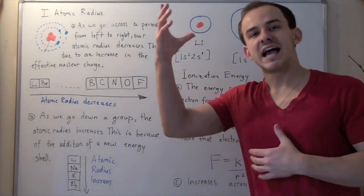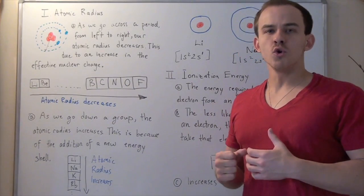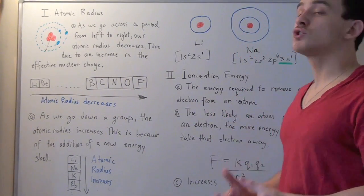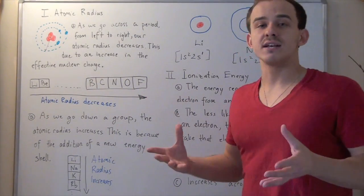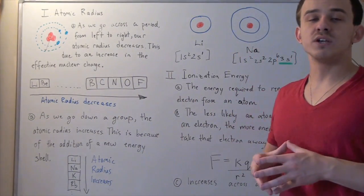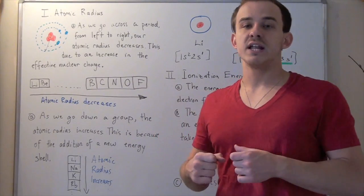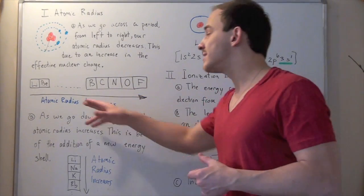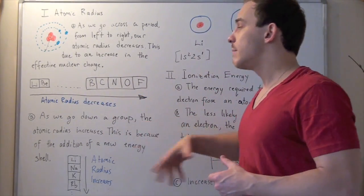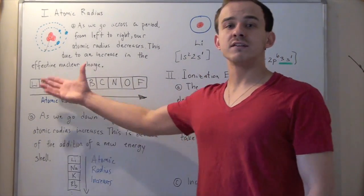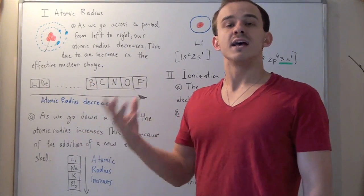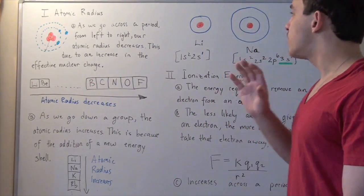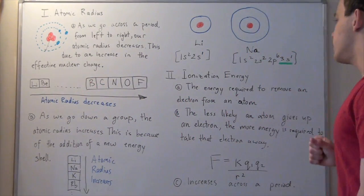In other words, as we go down a group, our atomic radius tends to grow in size, while as we go across the period, our atomic radius tends to decrease because our effective nuclear charge tends to increase. So that's atomic radius.